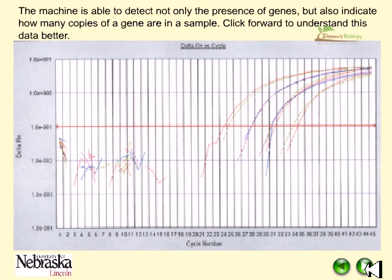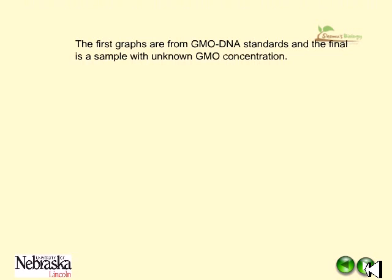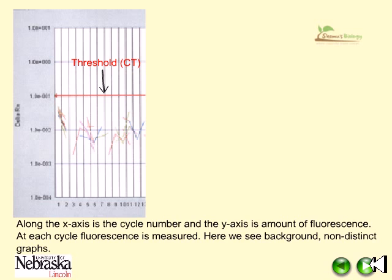The machine is able to detect not only the presence of genes but also indicate how many copies of a gene are in a sample. The first graphs are from the GMO DNA standards and the final graph is from a sample with unknown GMO concentration — GMO meaning genetically modified organism. Along the x-axis is the cycle number and the y-axis is the amount of fluorescence at each cycle. Fluorescence is measured where we see background non-distinct graphs.